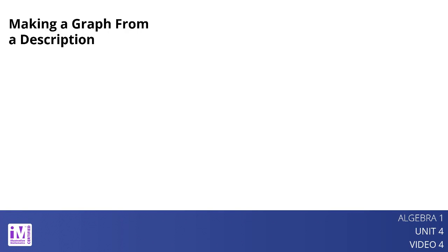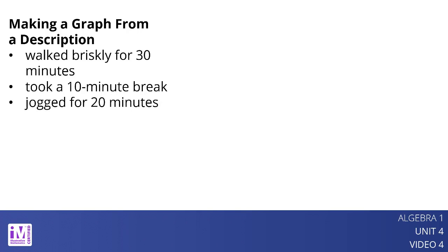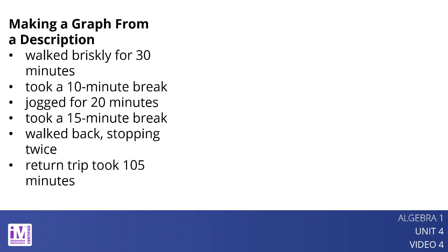Here is a description of a hiker's journey on a trail. A hiker walked briskly and steadily for about 30 minutes and then took a 10-minute break. Afterward, she jogged all the way to the end of the trail, which took about 20 minutes. There, she took a 15-minute break and then started walking back leisurely, stopping twice to enjoy the scenery. Her return trip along the same trail took 105 minutes.